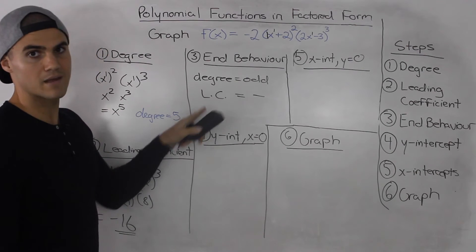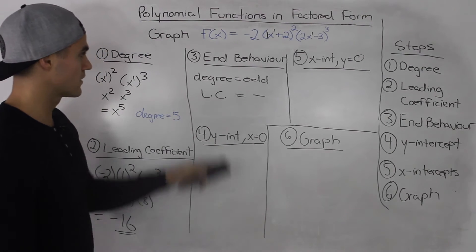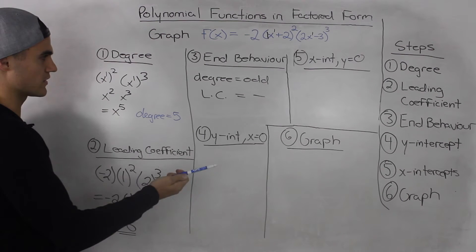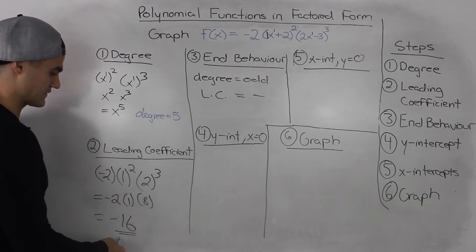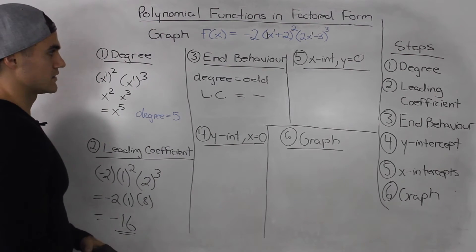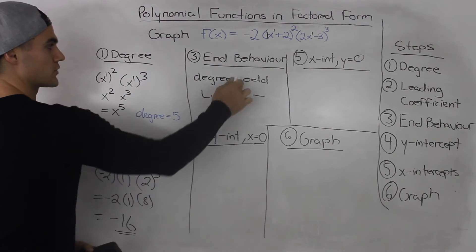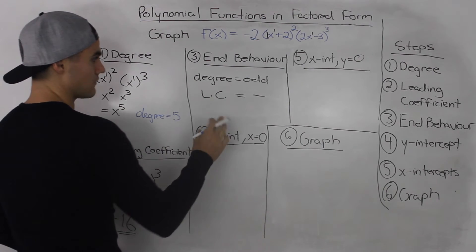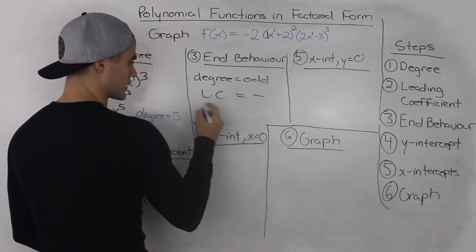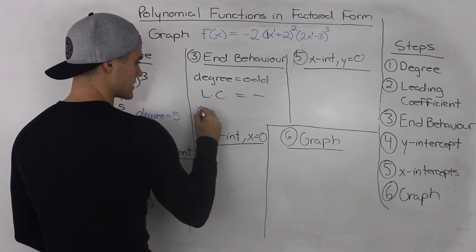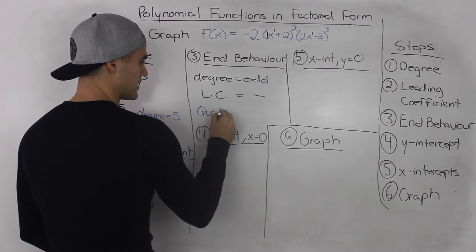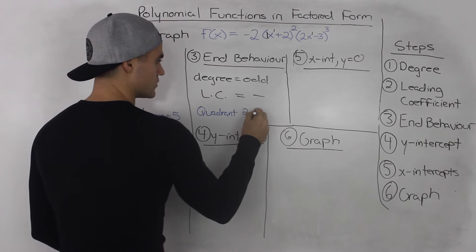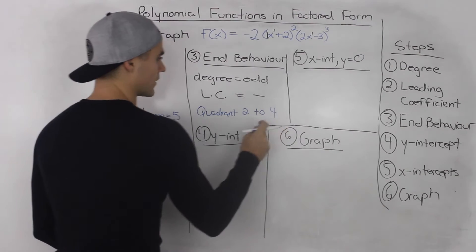Moving on to step 3, the end behavior. We know that the degree is odd because it's a degree of 5. The leading coefficient of negative 16 is negative. So with an odd degree and a negative leading coefficient, the end behavior of this polynomial function is going to be from quadrant 2 to quadrant 4.